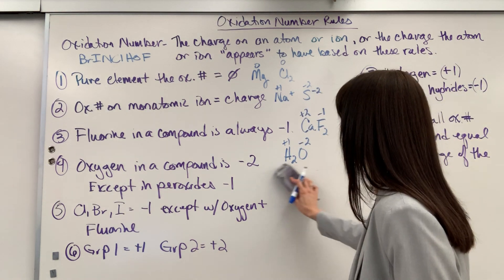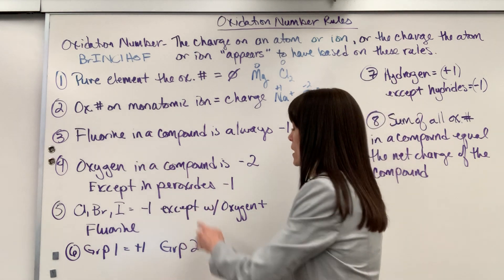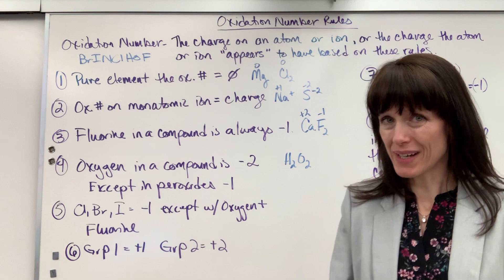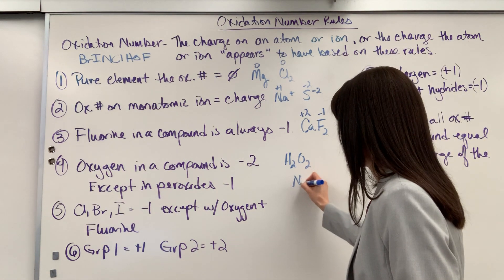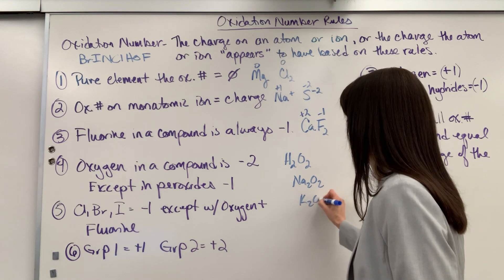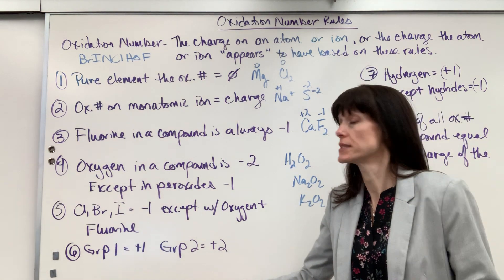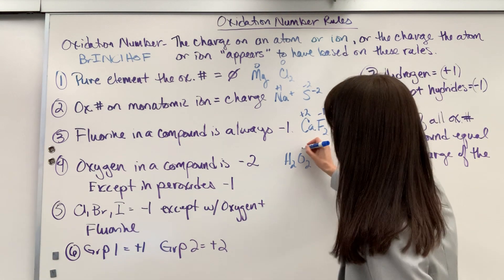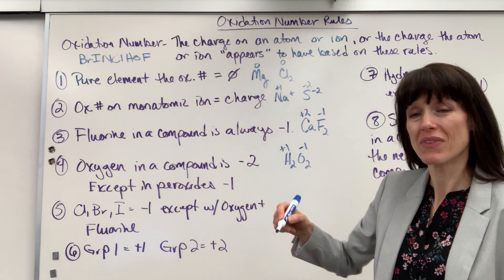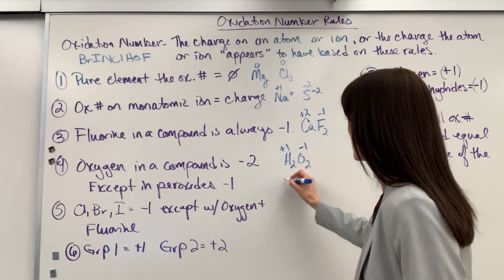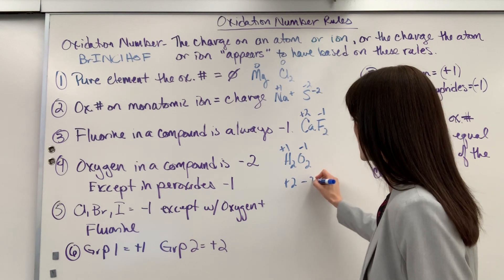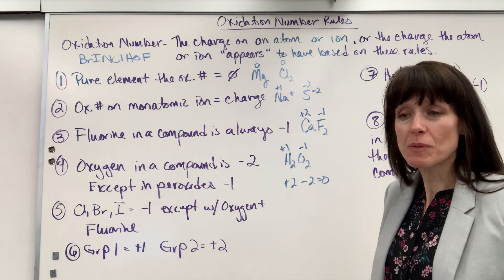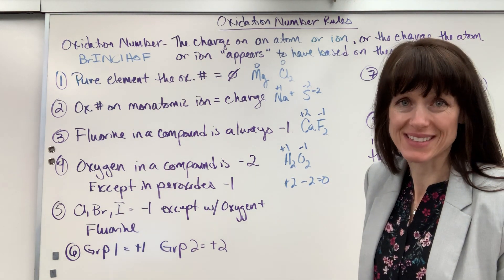There is one exception: in peroxides, oxygen is minus one. Examples of peroxides include H2O2, Na2O2, and K2O2. In H2O2: hydrogen is plus one, so plus one times two is plus two; oxygen is minus one, so minus one times two is minus two; plus two plus minus two equals zero, which is the net charge. If you're doing AP or college chemistry, professors love these exceptions.